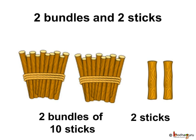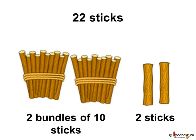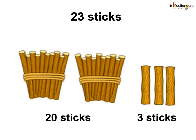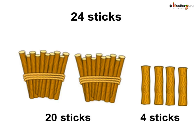Same way, two bundles of 10 sticks and two sticks is 22 sticks. Thus, 22 means two 10-stick bundles and two sticks. Same way, 20 sticks and three sticks is 23 sticks. Thus, 23 sticks means two 10s and three.